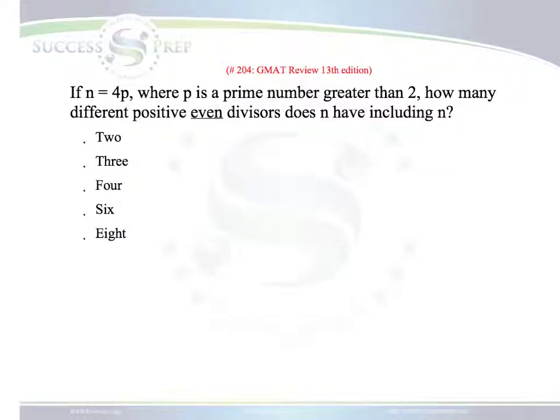For a question like this, the focus should be on the information given to you in the question. They're telling us that n is equal to 4p, and they're telling us that p is a prime number, so we need to know what prime numbers are, like 1, 3, 5, 7. But we want a prime number that's greater than 2, so that means you have to start at 3, 5, and 7.